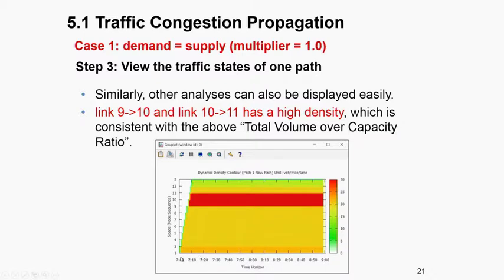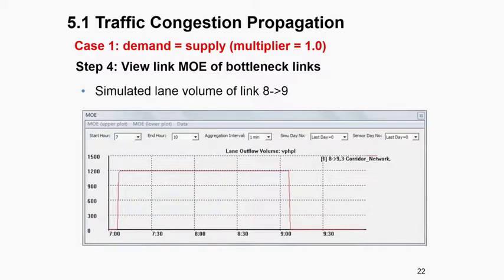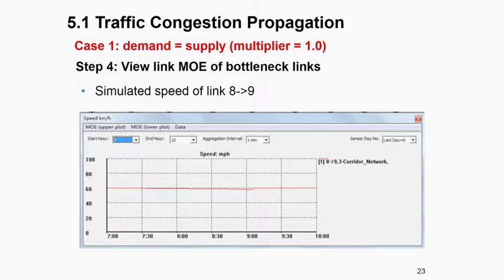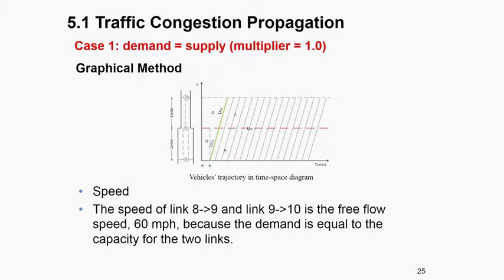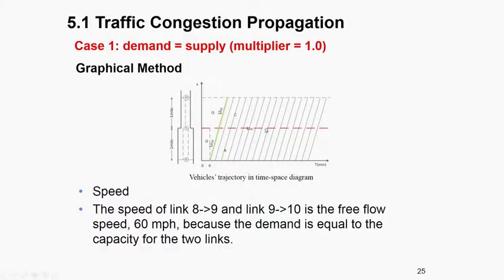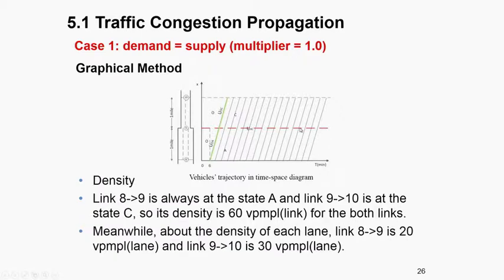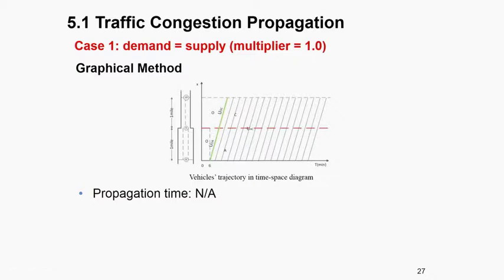Looking at the space-time diagram: the time axis is horizontal, the space axis is vertical. What we display is the dynamic density. Between nodes 9 to 11, we have a red period — a red block corresponding to very high density — and a yellow block corresponding to low density. We check the MLE, the bottleneck link, the density, and verify the simulation results. In this case, all traffic drives at free-flow conditions, with the corresponding link density but no queue propagation.